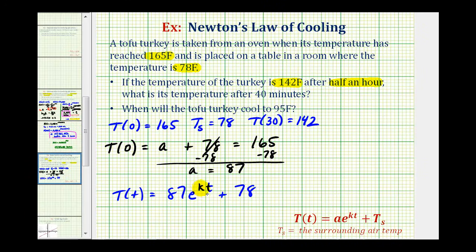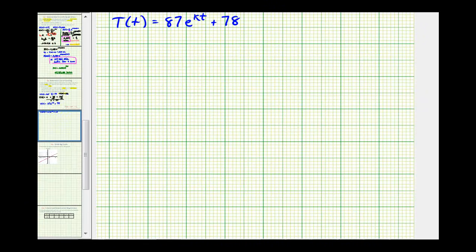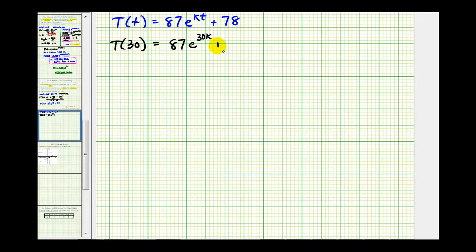Now we know that T of t must equal 87 times e raised to the power of kt plus 78. Now we need to find the value of k, which is the cooling rate expressed as a decimal, and we can do this because we know that T of 30 equals 142. So T of 30 would be equal to 87 times e raised to the power of 30k, plus 78, and this must equal 142.